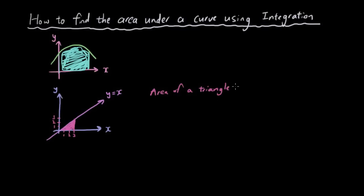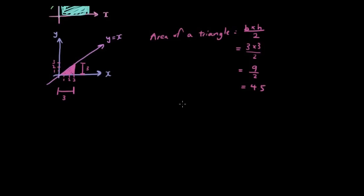So the area of a triangle is simply base times height divided by 2. That's pretty simple math from junior maths, so you should be able to know that. So area of a triangle is the base, in this case is 3, and the height of the triangle is also 3. So it's 3 times 3 divided by 2, which is 9 divided by 2, which is 4.5.